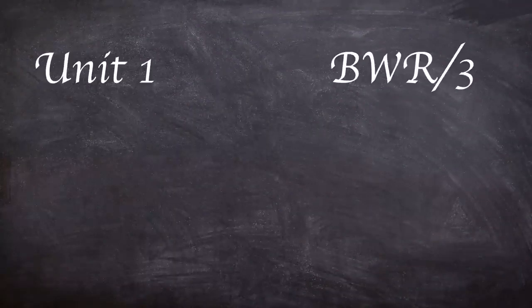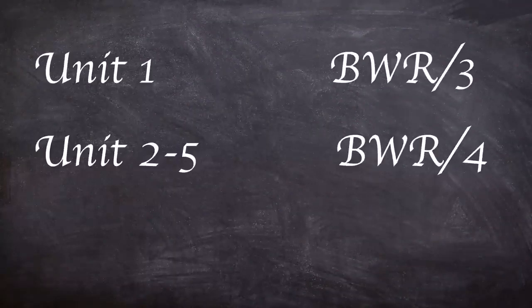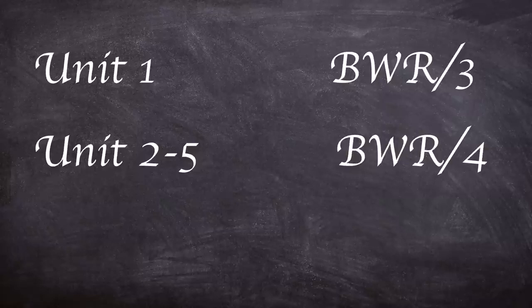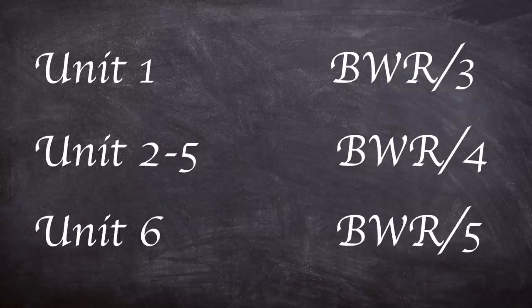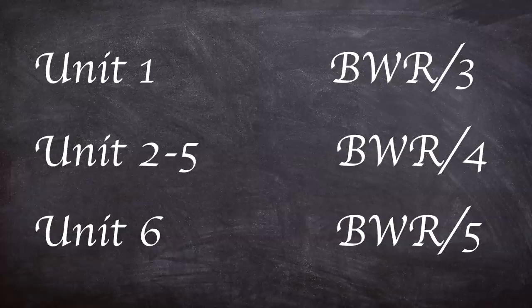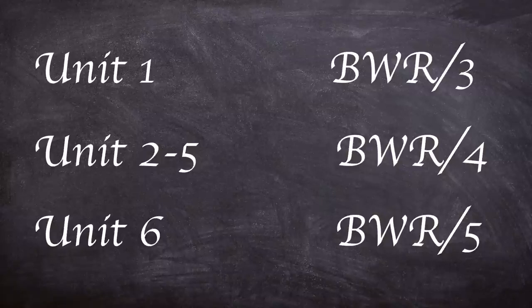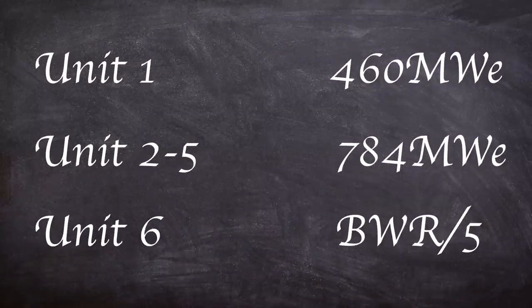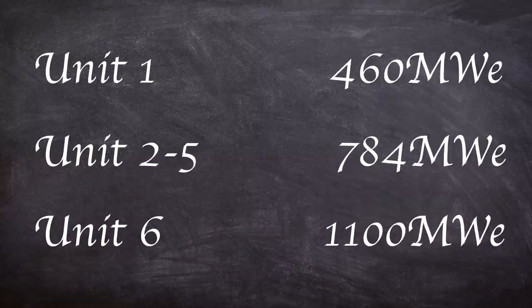After Unit 1 which was an earlier BWR-3 design, Units 2 to 5 were BWR-4 designs and Unit 6 was a BWR-5 design. Because of this the power outputs of the three designs were different with Unit 1 having 460MW of electricity, Units 2 to 5 having 784MW of electricity and Unit 6 having 1100MW of electricity.